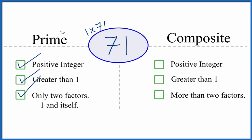So yes, 71 is a prime number. Positive integer greater than 1 and only two factors, one and itself.